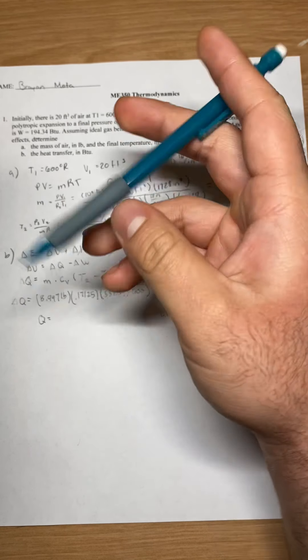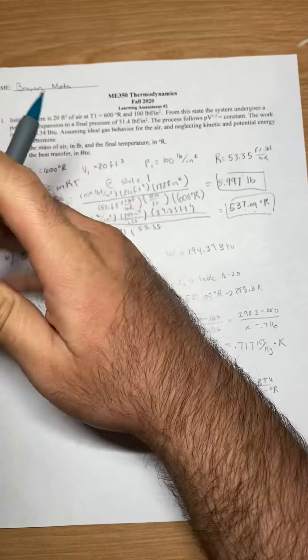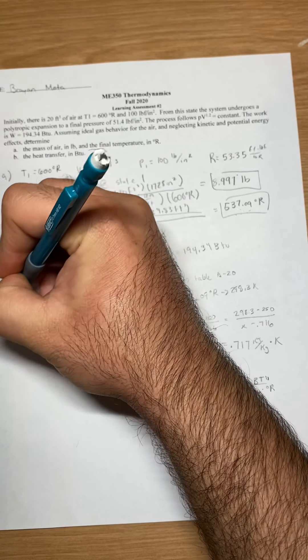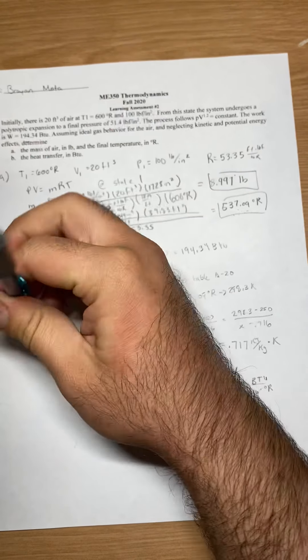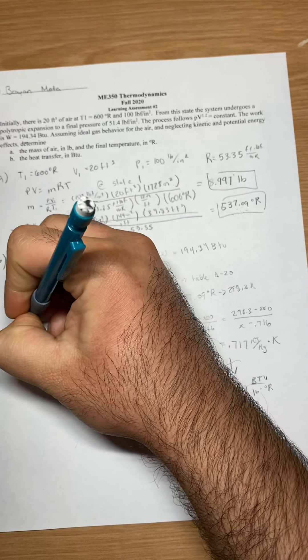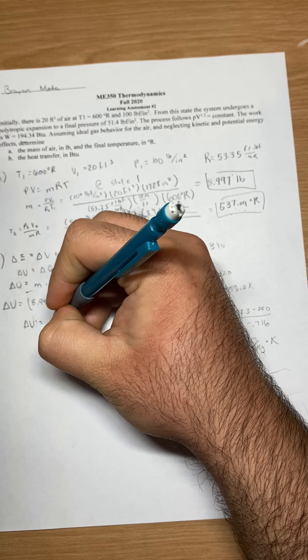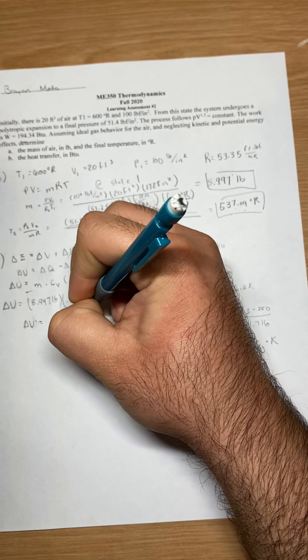That will give you a value of approximately... No, sorry. This is delta U. Getting confused. So this is delta U. My delta U, I get a value of negative 96.92.